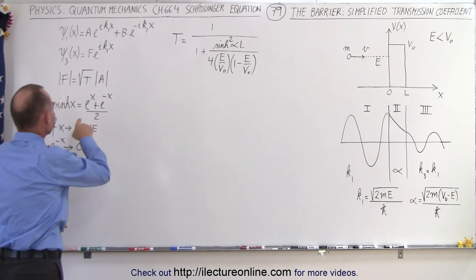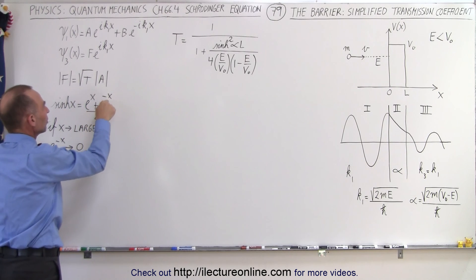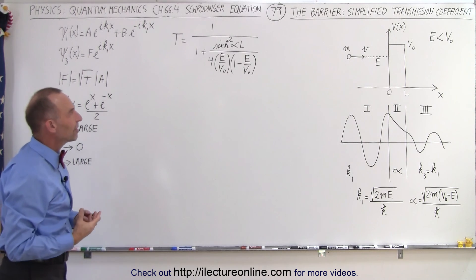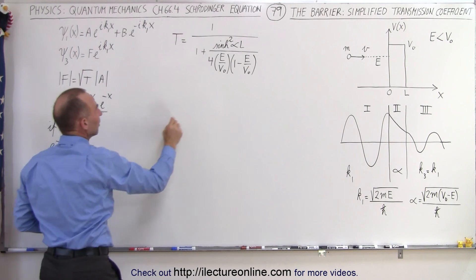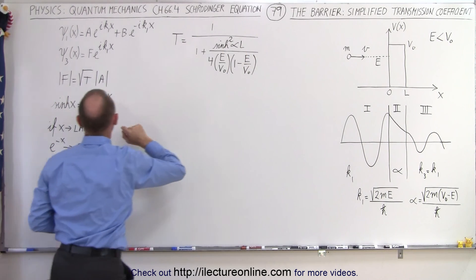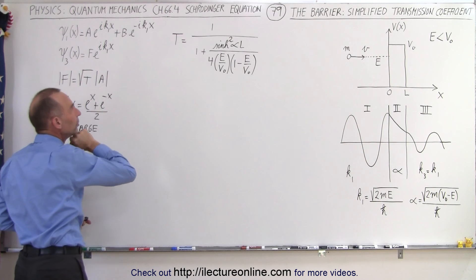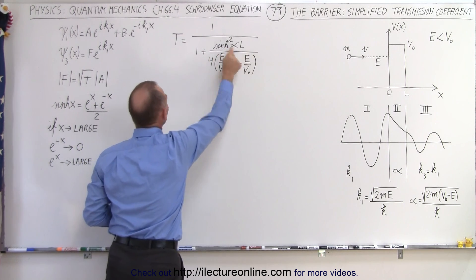Here we have the equation for the hyperbolic sine of x. This is e to the x plus e to the minus x divided by 2. Now if x becomes large, e to the minus x goes to 0, and e to the x becomes large. So what we can see here is that alpha L, which here is represented by the x, if that becomes a large number, then e to the minus alpha times L becomes basically 0.